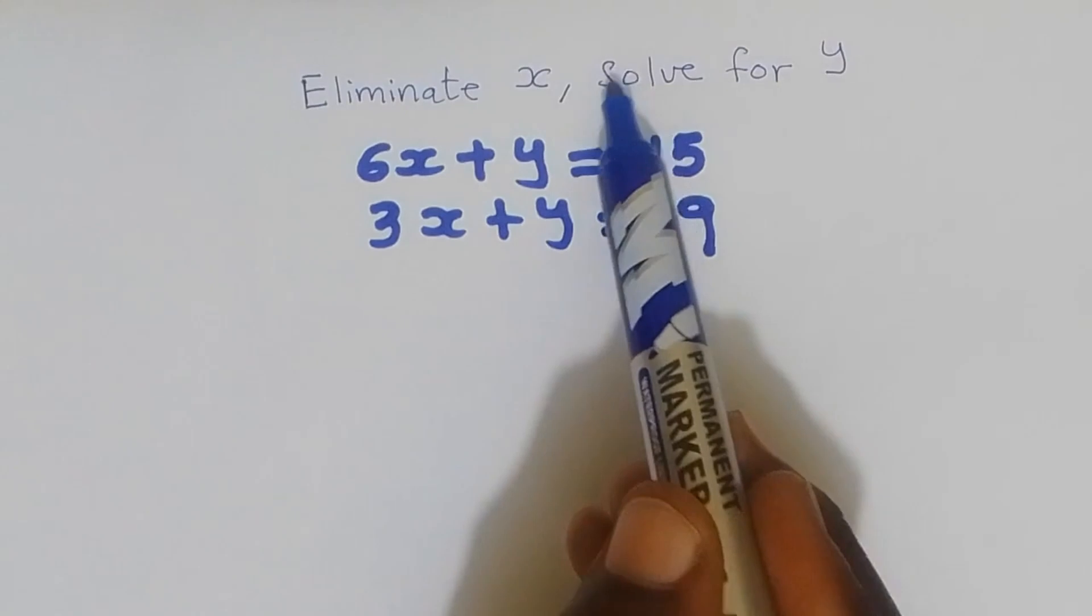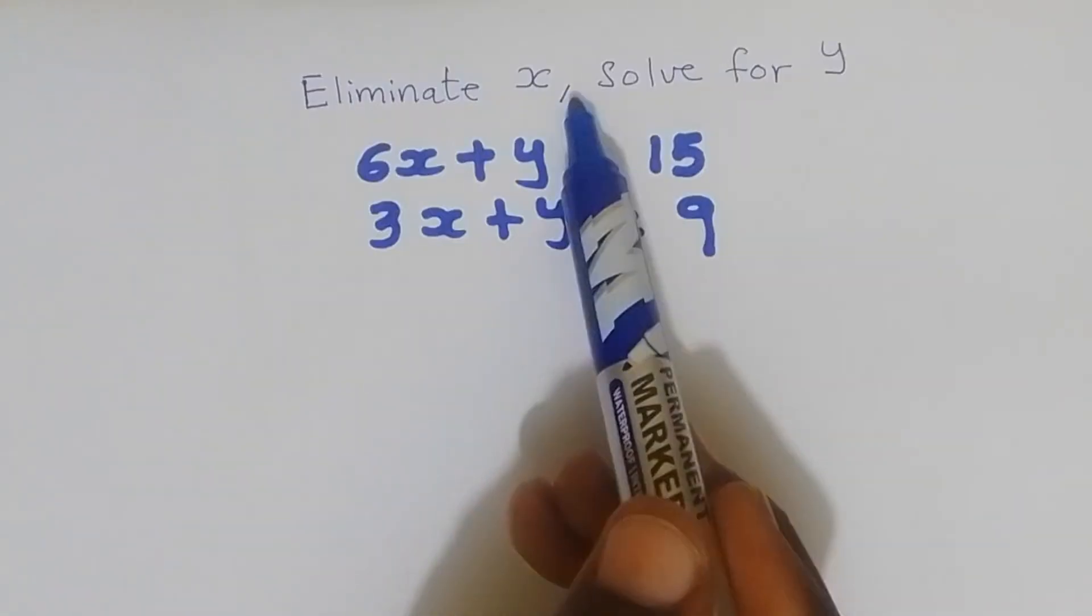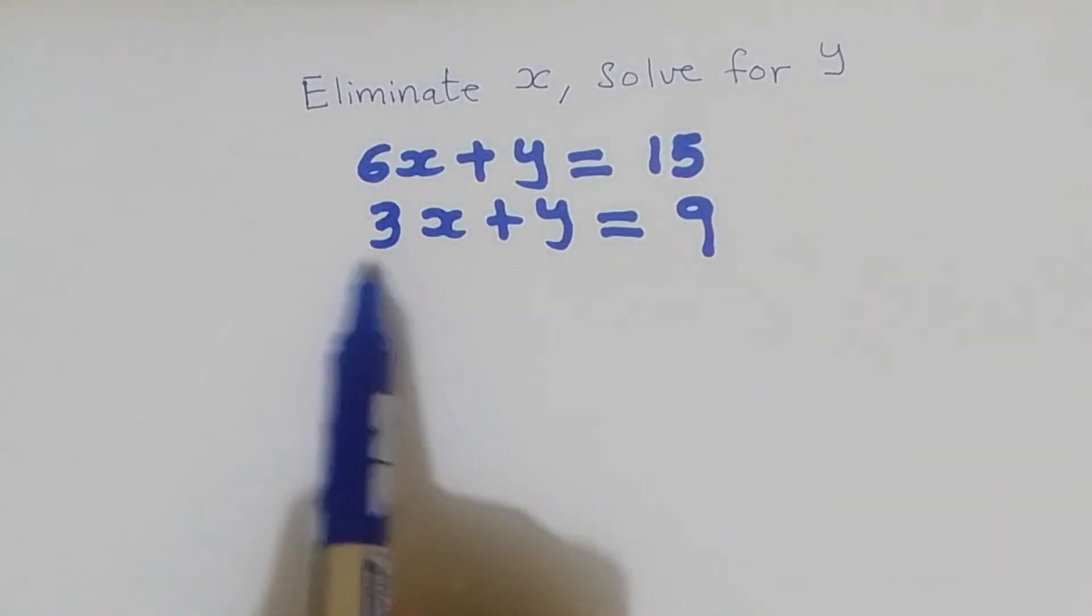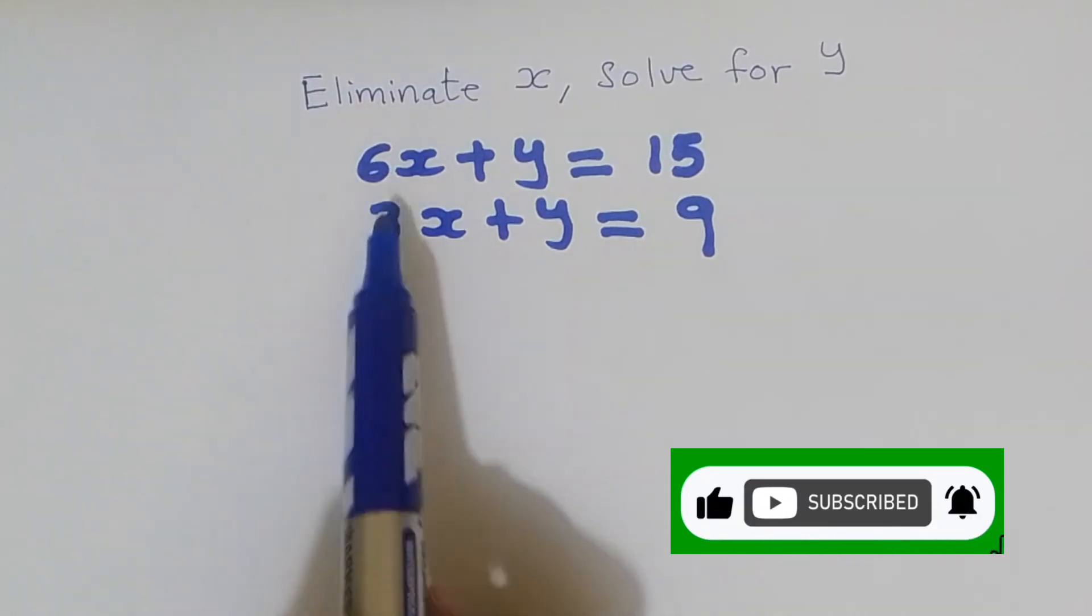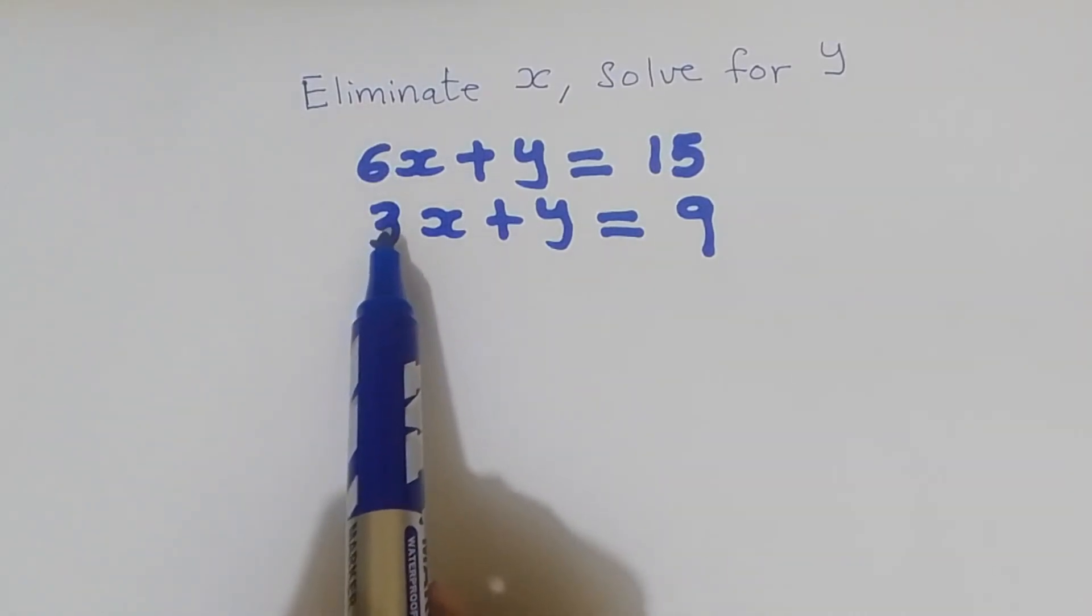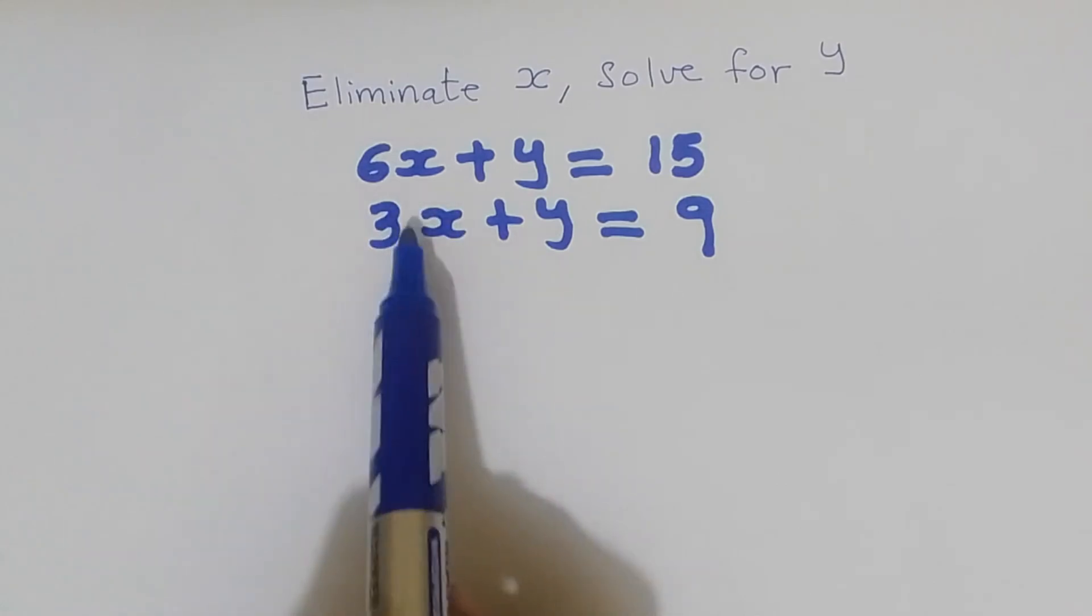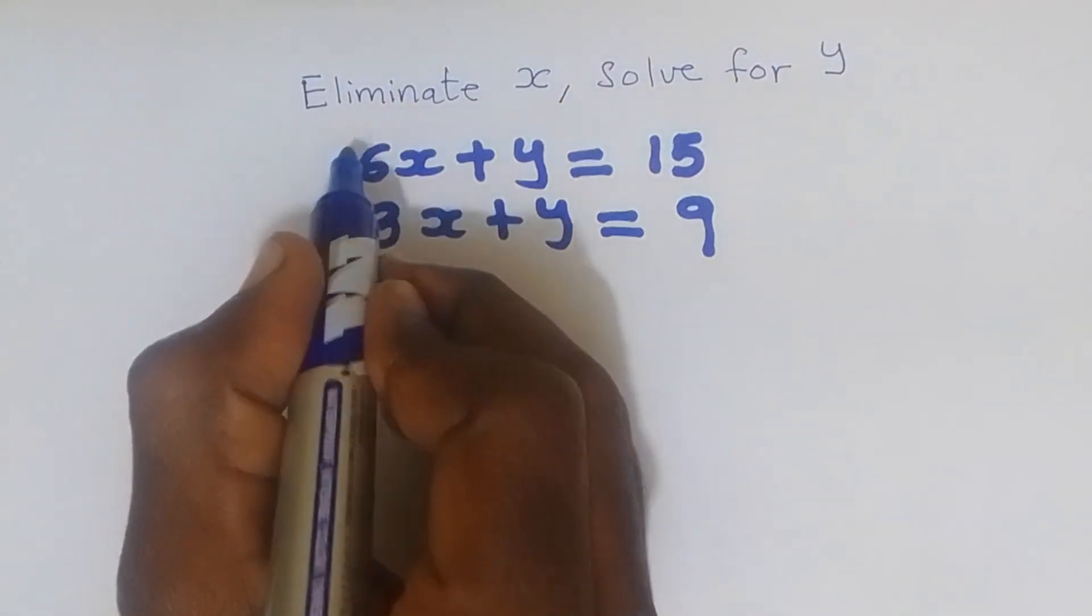Let's go and solve for y. So we are going to eliminate x and solve for y. To eliminate x I need to make this coefficient here equal. I have 6 here, I have 3 here. I need to get a coefficient 6 here instead of 3. So what I'm going to do